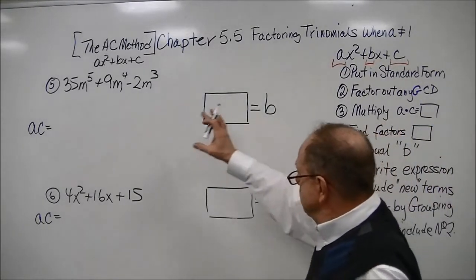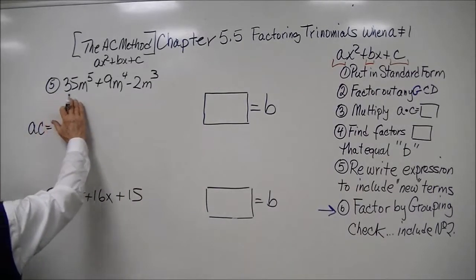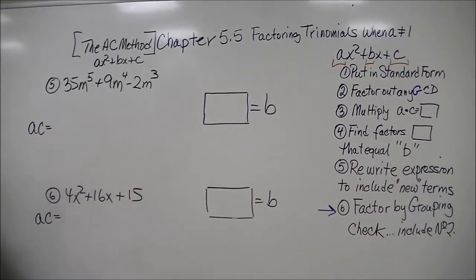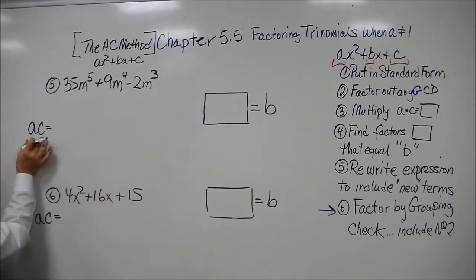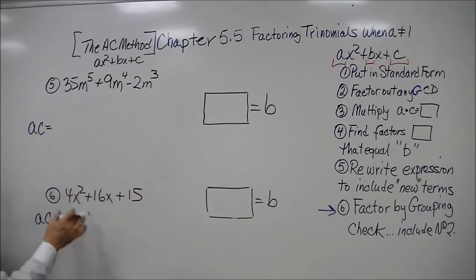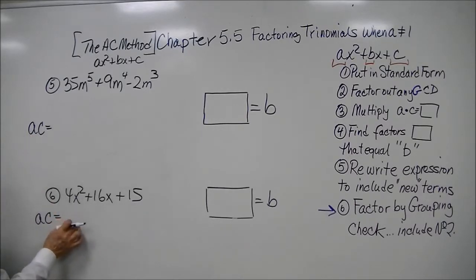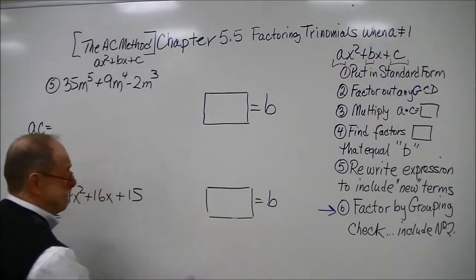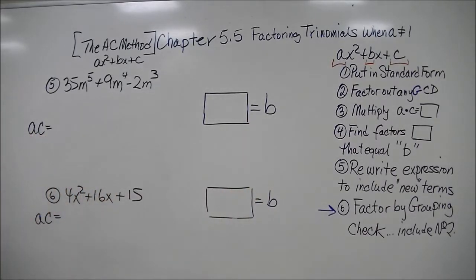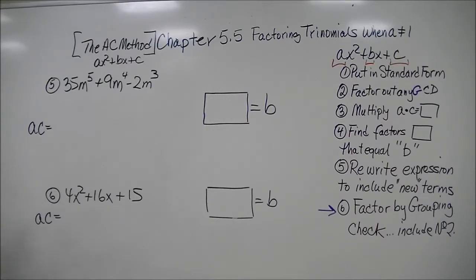We're using this pattern: set up the trinomial in standard form, factor out the greatest common factor if there is one, multiply a times c, then take factors of that product that equal b. If you want to try these, write them down, try on your own, then continue the tape to see if you're getting it.